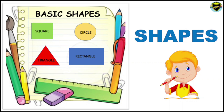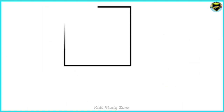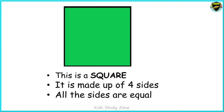We'll start with the first one, and this is a square. It is made up of four sides. All the sides are equal. Can you see? All the four sides are equal.